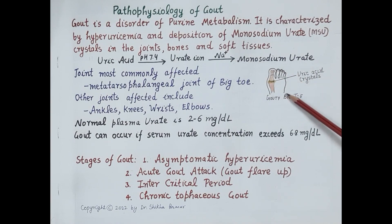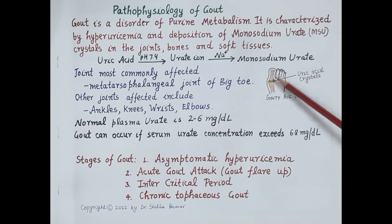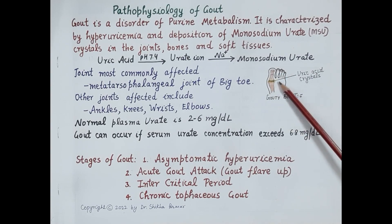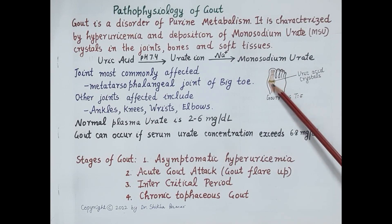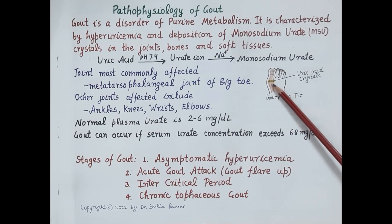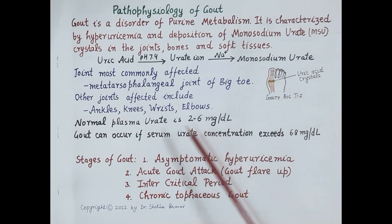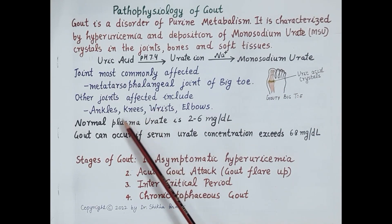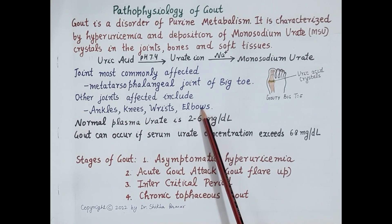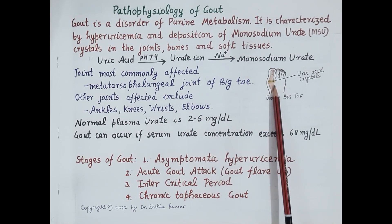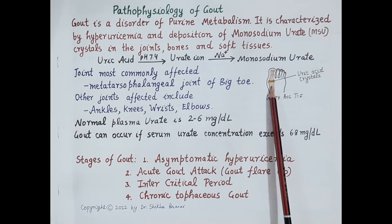Now look at this figure of the foot. This is the big toe, and these are the two phalanges. The joint most commonly affected by gout is the metatarsophalangeal joint of the big toe. These are the uric acid crystals deposited in this joint. The other joints affected by gout include ankles, knees, wrists, and elbows. These monosodium urate crystals deposit in the joints and produce inflammation, so gout is also called inflammatory arthritis.